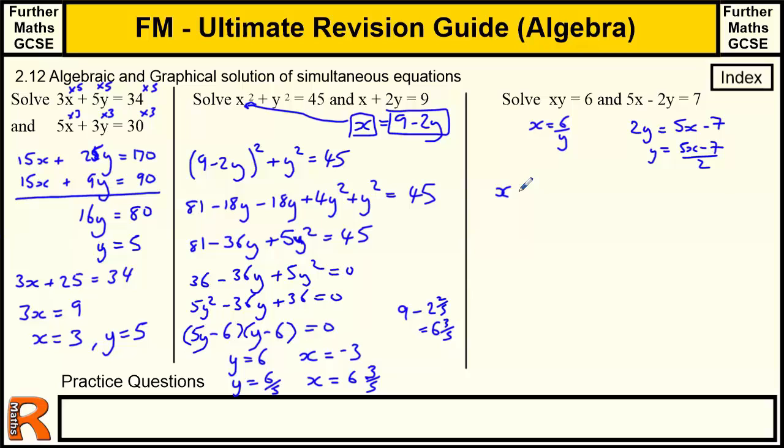So we've got X times Y, which is 5X minus 7 all over 2 equals 6. I'm going to times throughout by 2 first. So X times 5X minus 7 equals 12. That's got rid of the 2 on the bottom. And then I'm going to multiply out this bracket. I get 5X squared minus 7X. Then I'm going to bring the 12 over to this side. 5X squared minus 7X minus 12 equals 0.